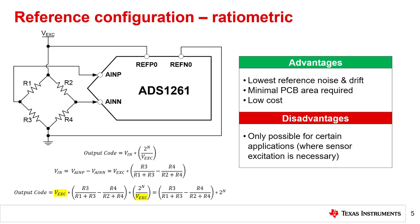Since both the input and reference share an excitation source, VEXE, any noise or drift in the excitation source affects the measurement and the reference equally.